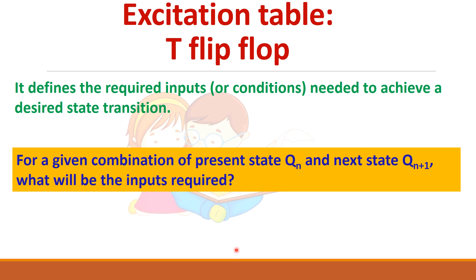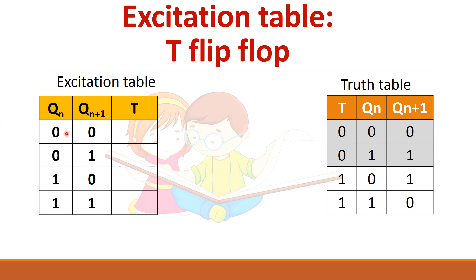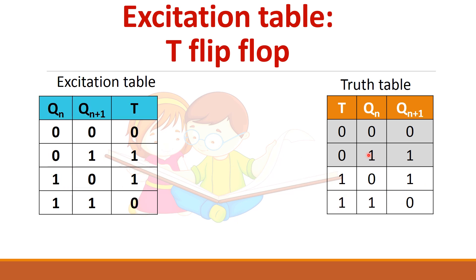Now we will write the excitation table from the truth table. For T flip-flop, the excitation table is similar to the truth table. For Qn and Qn plus one combination zero-zero, the T input should be zero. For combination zero-one, T should be one. For combination one-zero, T should be one. For combination one-one, T should be zero.